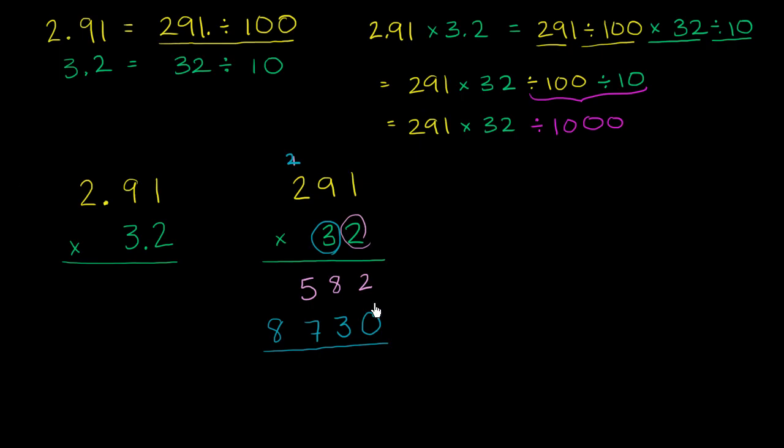We can add, and we would get 2, 8 plus 3 is 11, 6 plus 3 is 13, and then you get 9. So you get 9,312. So this is going to be equal to 9,312 divided by 1,000.